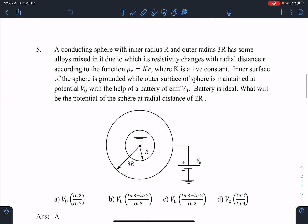Here is the problem statement. A conducting sphere with inner radius R and outer radius 3R has some alloys mixed in it, due to which its resistivity changes with radial distance r according to the function ρ_r = Kr, where K is a positive constant.